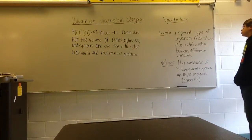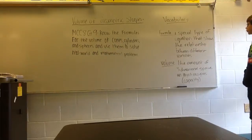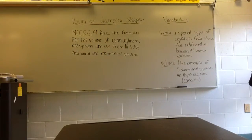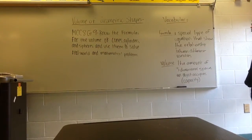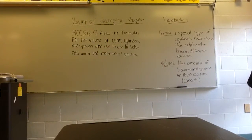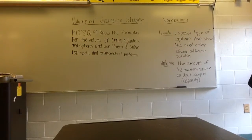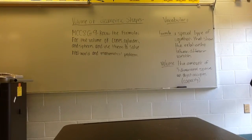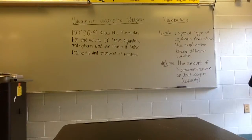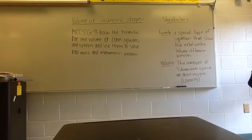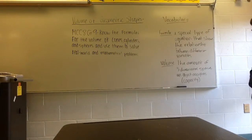The vocabulary you will use is formula and volume. A formula is a special type of equation that shows the relationship between different variables. Volume is the amount of three-dimensional space that an object occupies — this is also known as capacity.